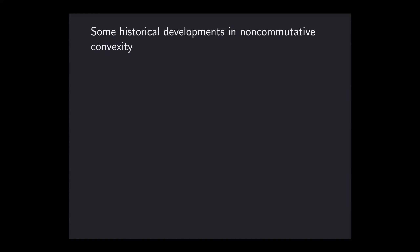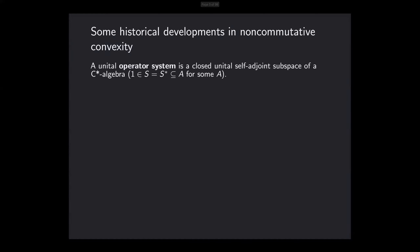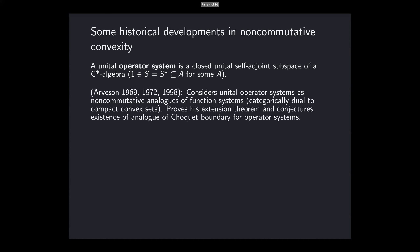Some history, and first of all, just to establish some terminology: I'm going to be talking about operator systems. An operator system typically is a unital self-adjoint subspace of a C*-algebra. Arveson was really the first person to consider operator systems systematically, viewing them as non-commutative analogs of function systems, sometimes called Archimedean order unit spaces in the convexity literature.